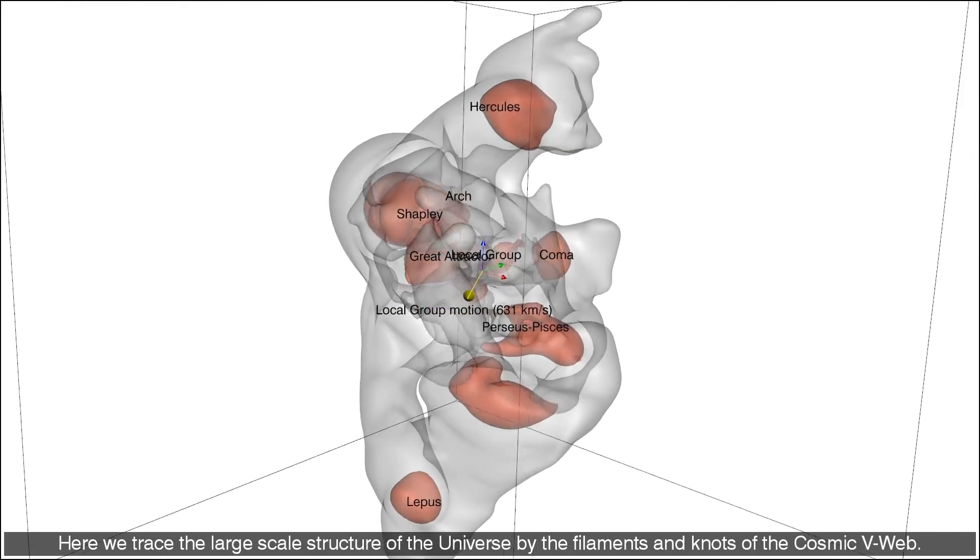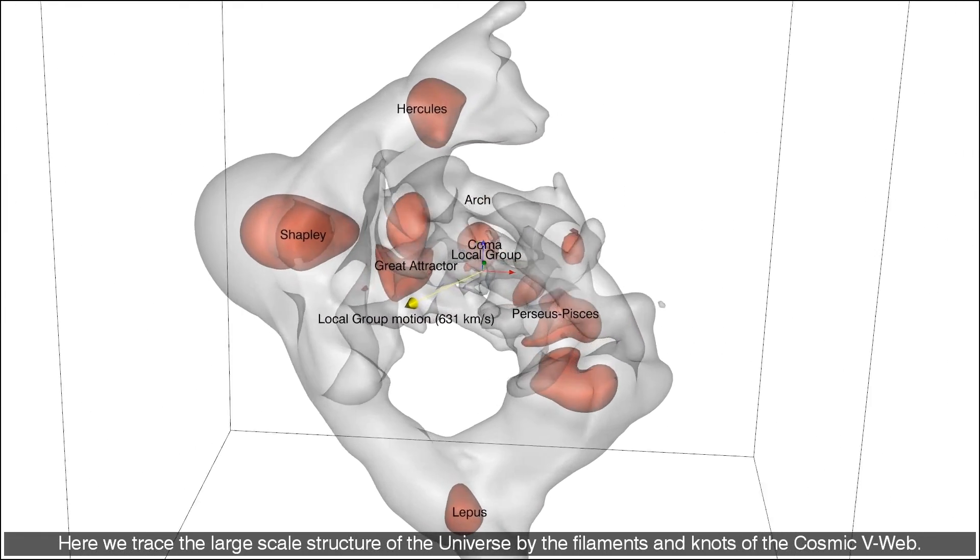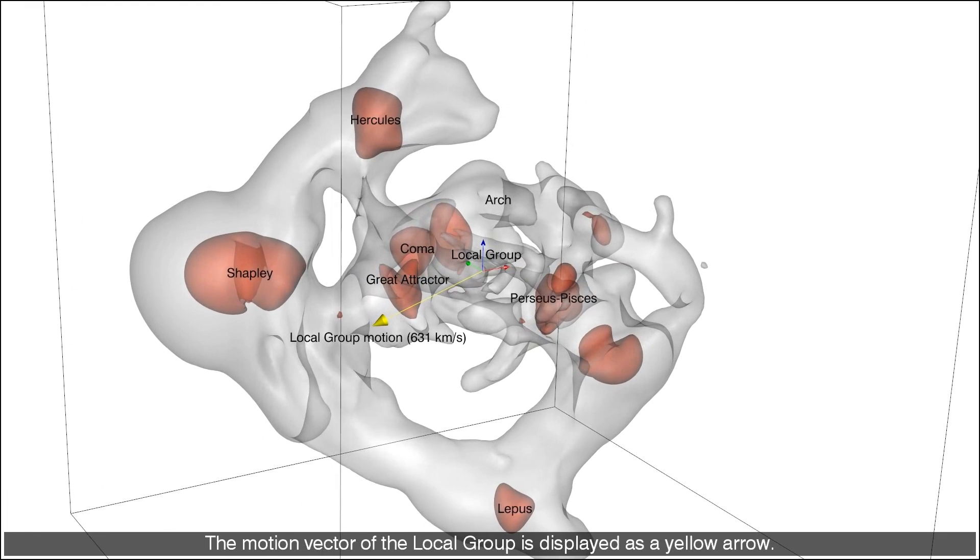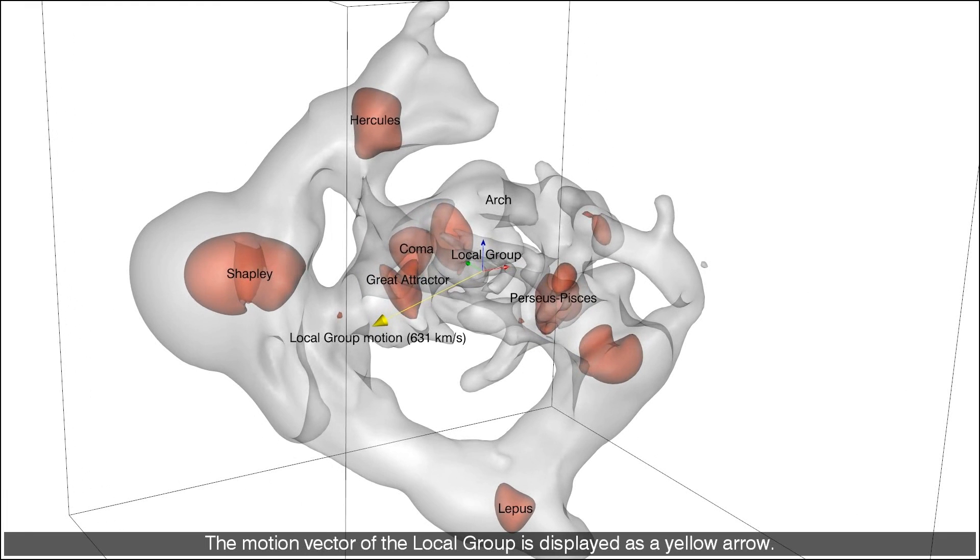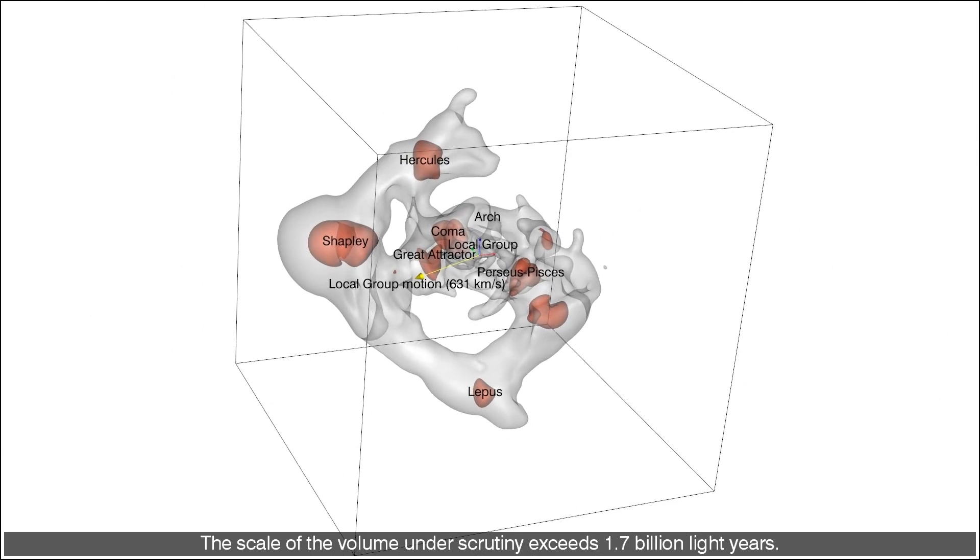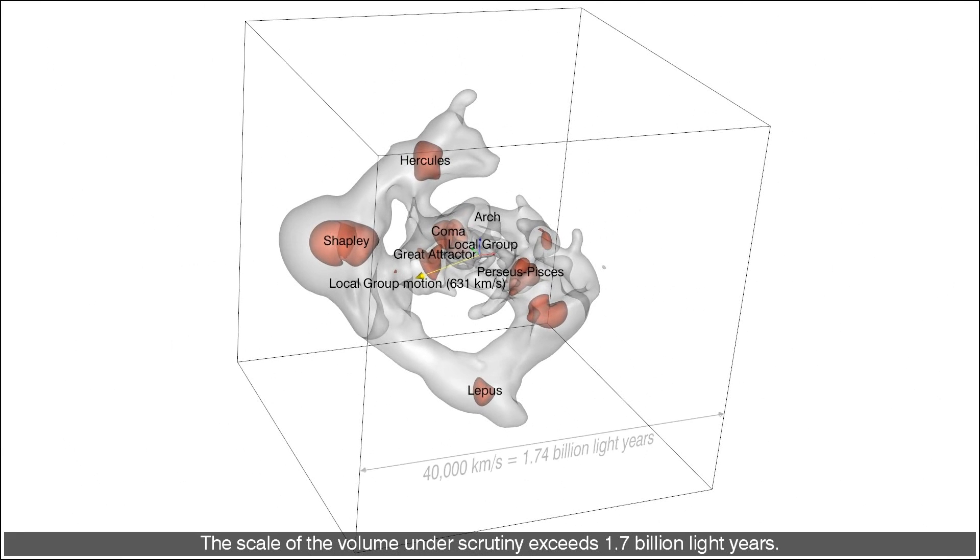Here we trace the large scale structure of the universe by the filaments and knots of the cosmic V-web. The motion vector of the local group is displayed as a yellow arrow. The scale of the volume under scrutiny exceeds 1.7 billion light years.